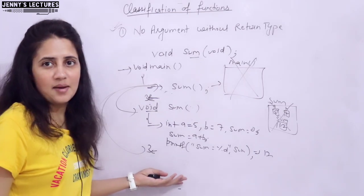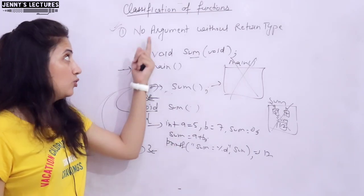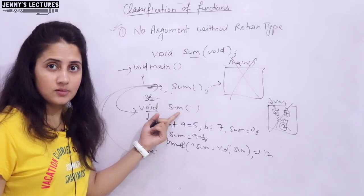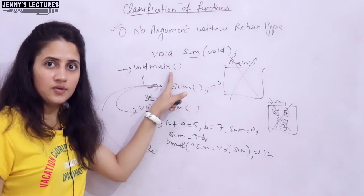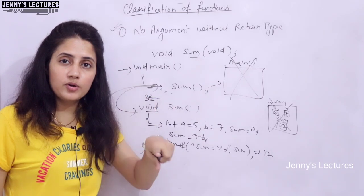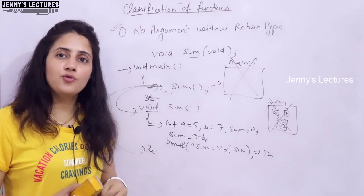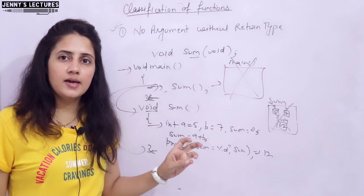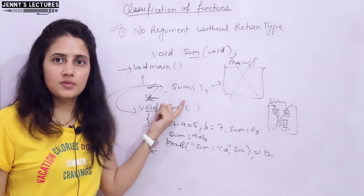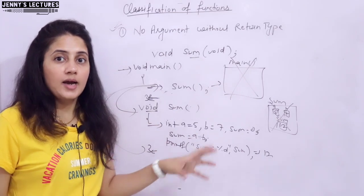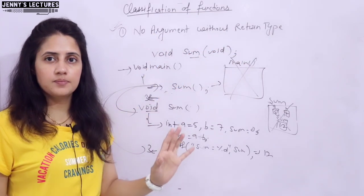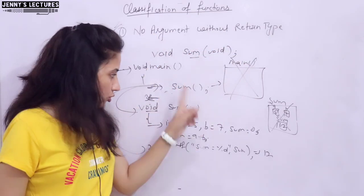This is a simple example of the no-argument, no-return-type classification. Here, main is the calling function and sum is the called function, because we are calling sum from main. An assignment for you: write a program with four functions — sum, subtraction, multiply, and divide — all called from main, all falling in this category of no argument and no return type.